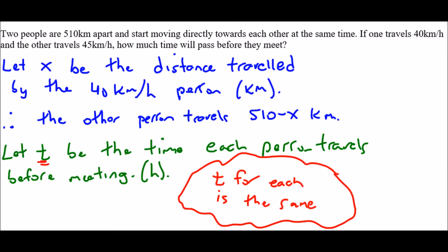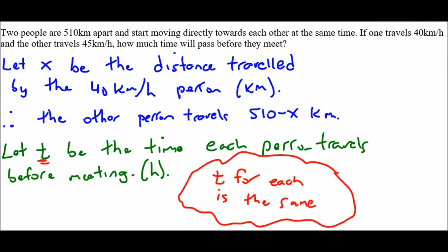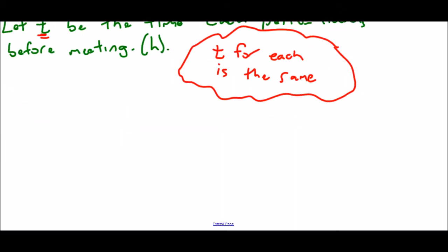So if I write an equation for both of them, so the first person and the second person, we know that time is the same. So I'm going to write an equation for time. And again, this is what we looked at in another slide, that we know that time is equal to distance divided by speed.